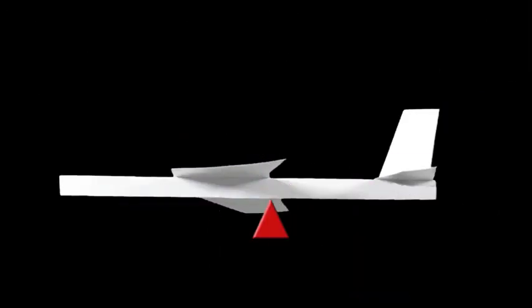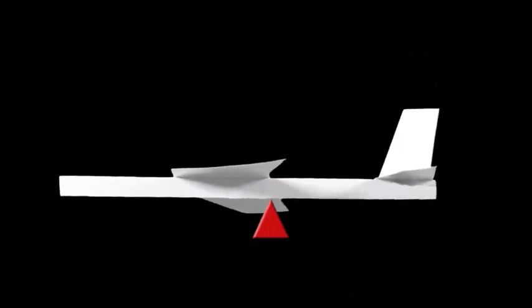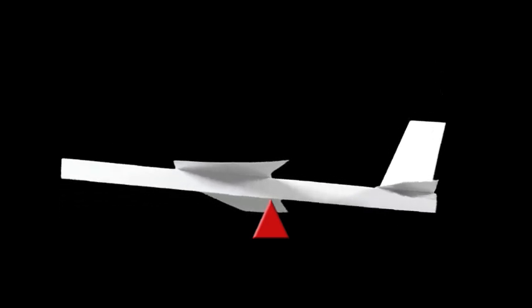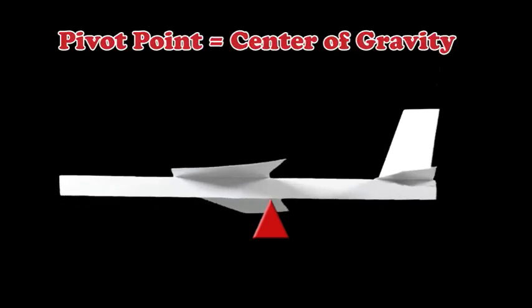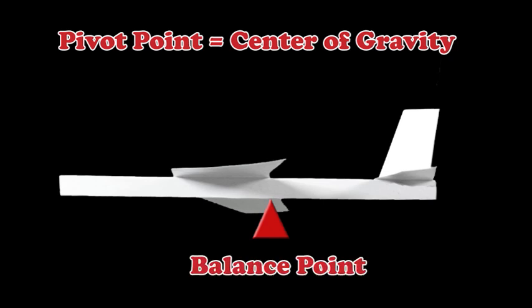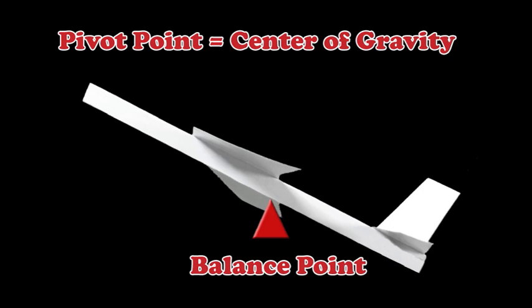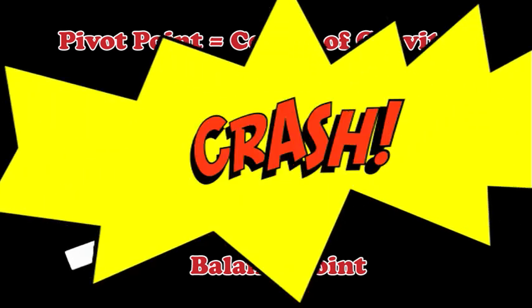Unlike our scale, the plane may be heavier in the front or the back depending on how we build the plane. This pivot point is approximately where your plane's center of gravity is. It is this balance point that affects whether your plane flies upward too much into a stall or nosedives into a crash.